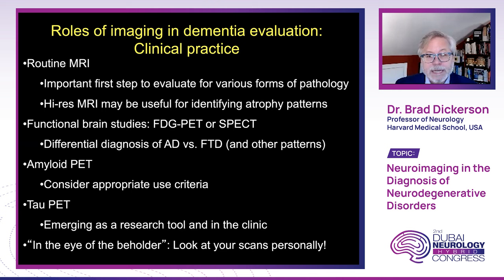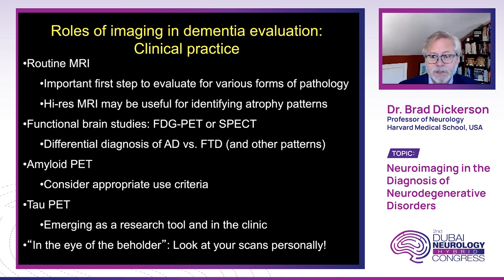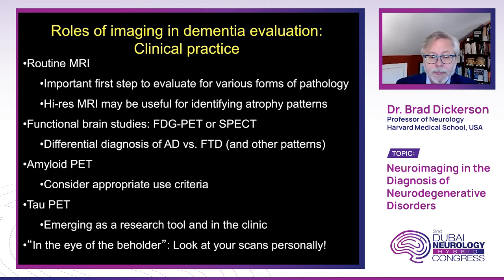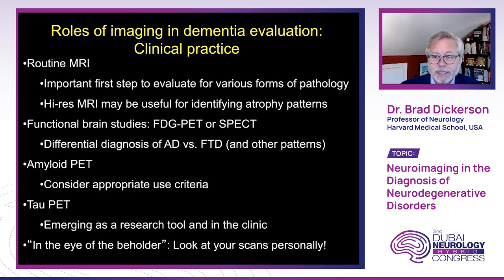I like to get 3D T1-weighted scans as well as T2-weighted FLAIR scans and look at those scans in all three planes, as some localized atrophy is more visible in one plane than another. Functional brain studies like FDG-PET or SPECT can sometimes more sensitively pick up functional brain abnormalities than MRI. Amyloid PET is widely available in the US and Europe but may not be accessible due to reimbursement. Tau PET is emerging as a research tool beginning to enter the clinic but is not yet widely available.